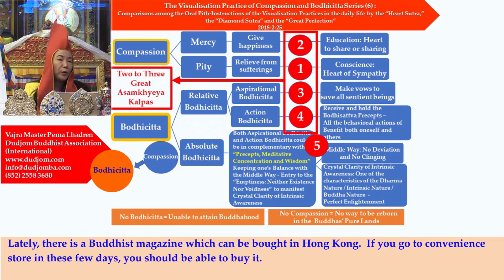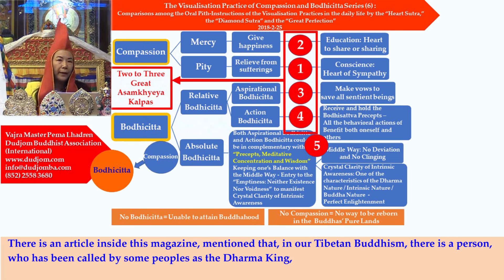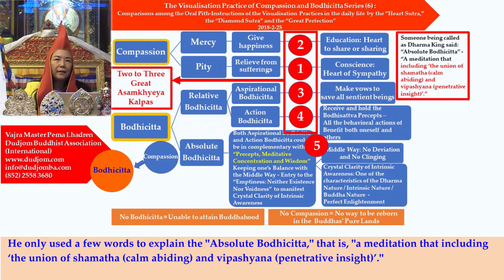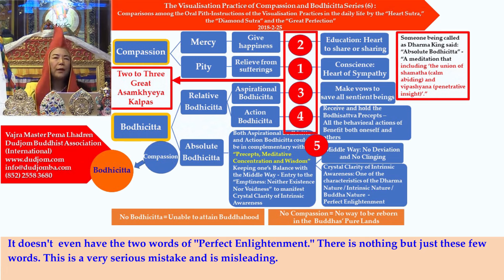Lately, there is a Buddhist magazine which can be bought in Hong Kong. There is an article inside this magazine that mentions that within Tibetan Buddhism, a person called by some as a Dharma king talked about absolute bodhicitta, but he only used a few words — a meditation including the union of shamatha, calm abiding, and vipasshyana, penetrative insight — without even the two words 'perfect enlightenment.' This is a very serious mistake and is misleading.